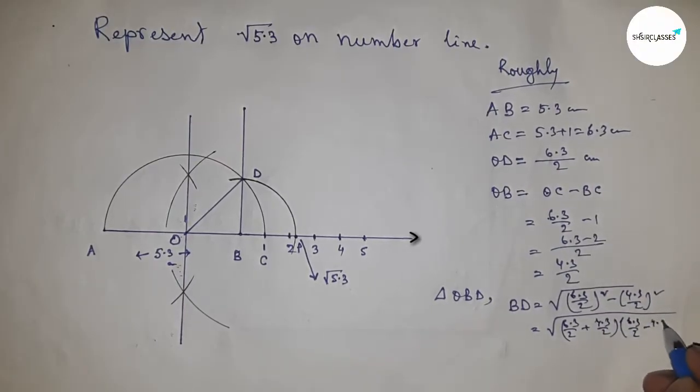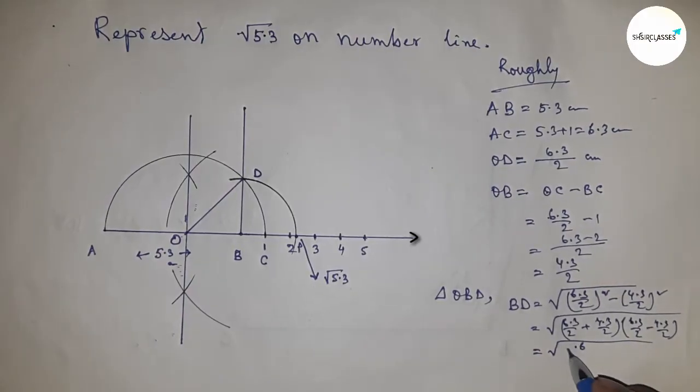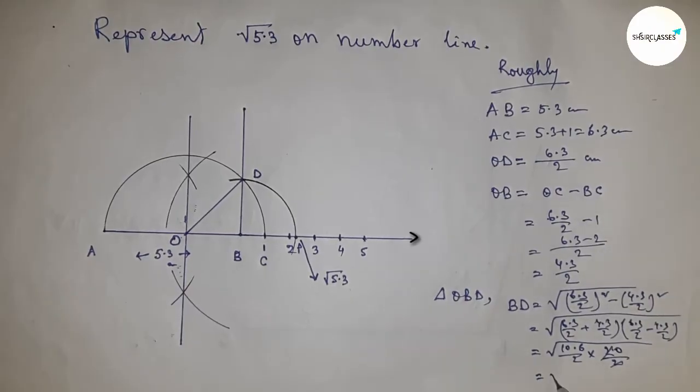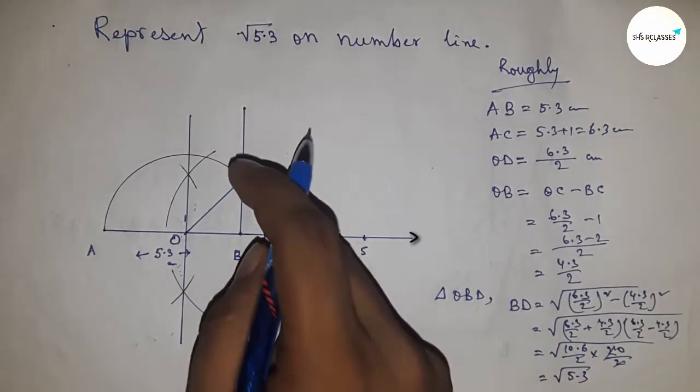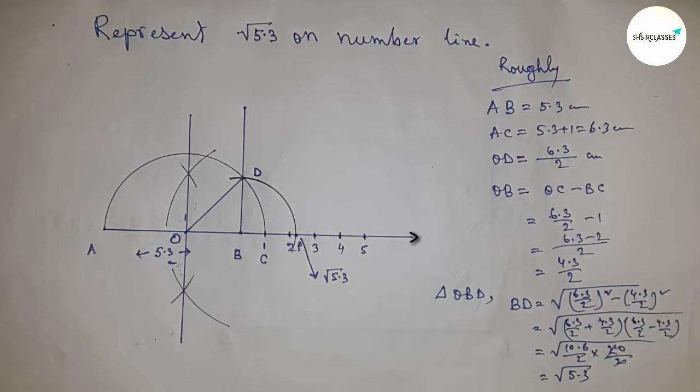After calculating this, this is 10.6 into 2 by 2. After calculating, this is root 5.3, so this is the length of BD.